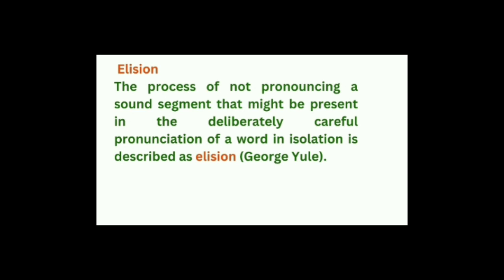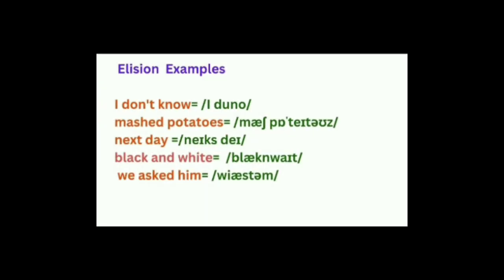Elision is the opposite. It is the process of not pronouncing a sound segment that might be present in the deliberately careful pronunciation of a word in isolation. For example: 'I don't know' becomes 'I dunno'; 'mashed potatoes' becomes 'mash potatoes' — the /d/ is missing; 'next day' becomes 'nex day'; 'black and white' becomes 'black 'n white'; 'we asked him' becomes 'we ask him'.